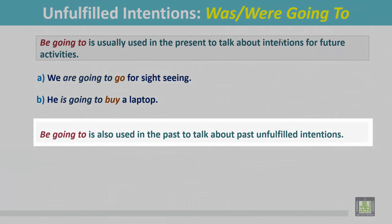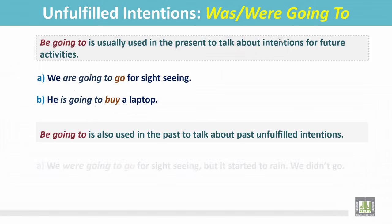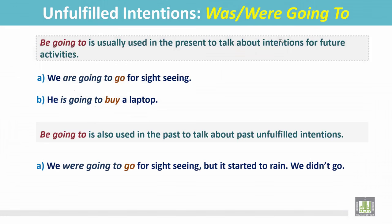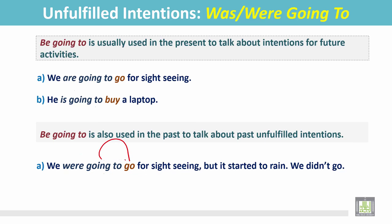Be going to is also used in the past to talk about past unfulfilled intentions. For example: 'We were going to go sightseeing, but it started to rain. We didn't go.' Our plan was to go sightseeing, but since it started to rain, we cancelled the plan. We didn't go — so it was an unfulfilled intention in the past. Here we use 'were going to,' and going to is followed by the simple present form of the verb.